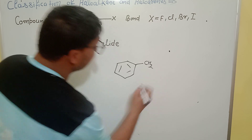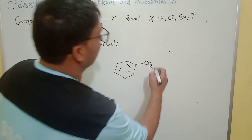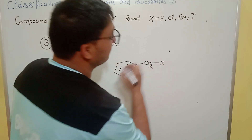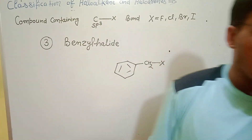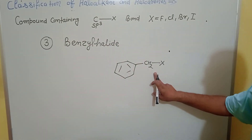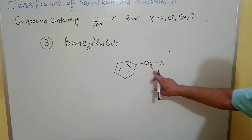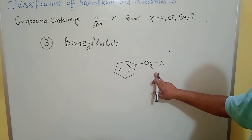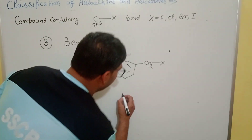When a benzyl group is attached to a halogen, this is the benzylic form of a halide, called benzyl halide.